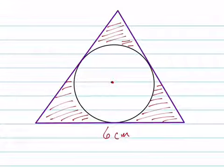They want us to find the area of the shaded region here, given that this is a regular triangle, an equilateral triangle. So, how do we do this?